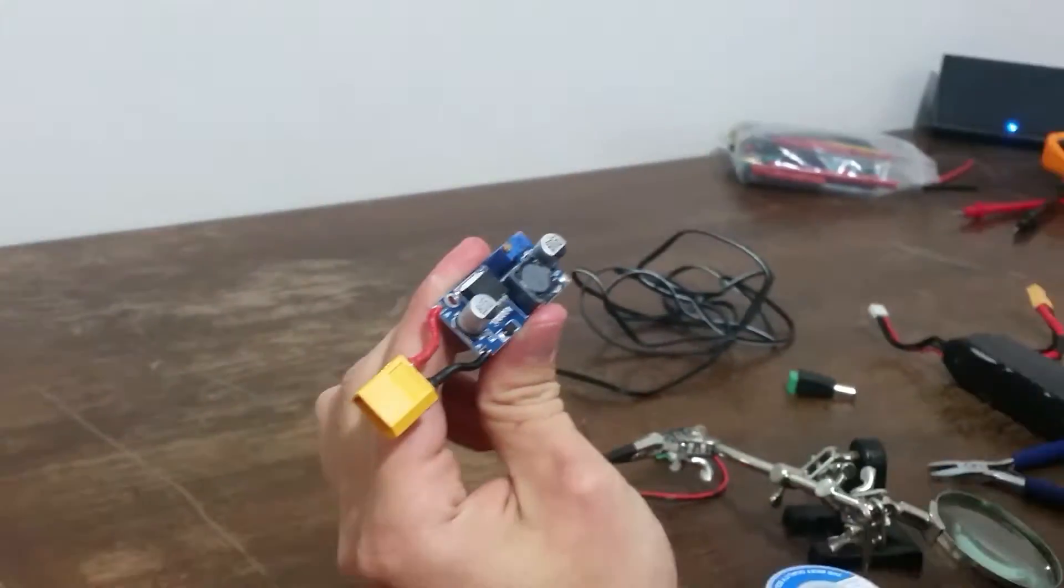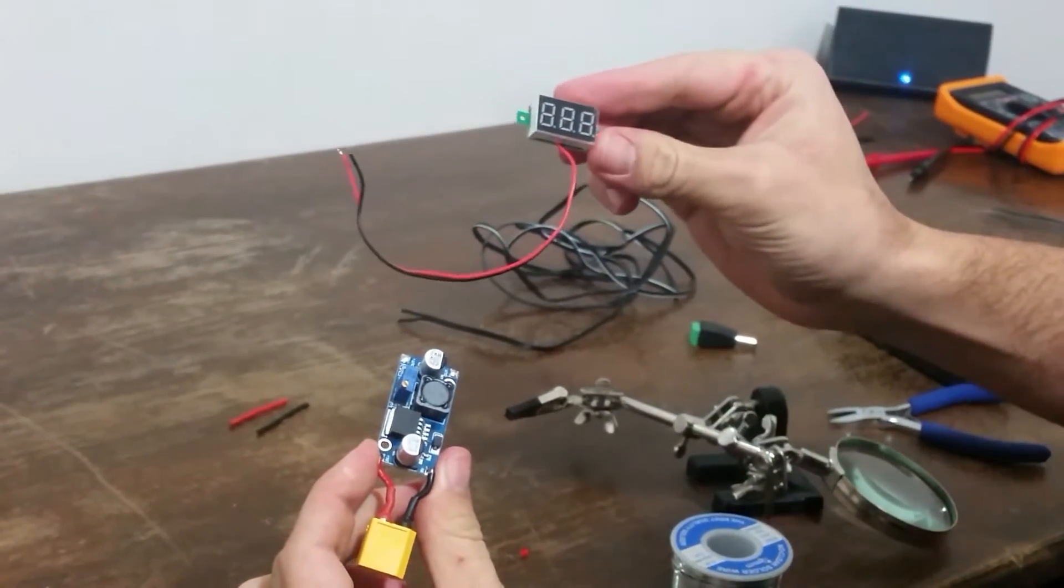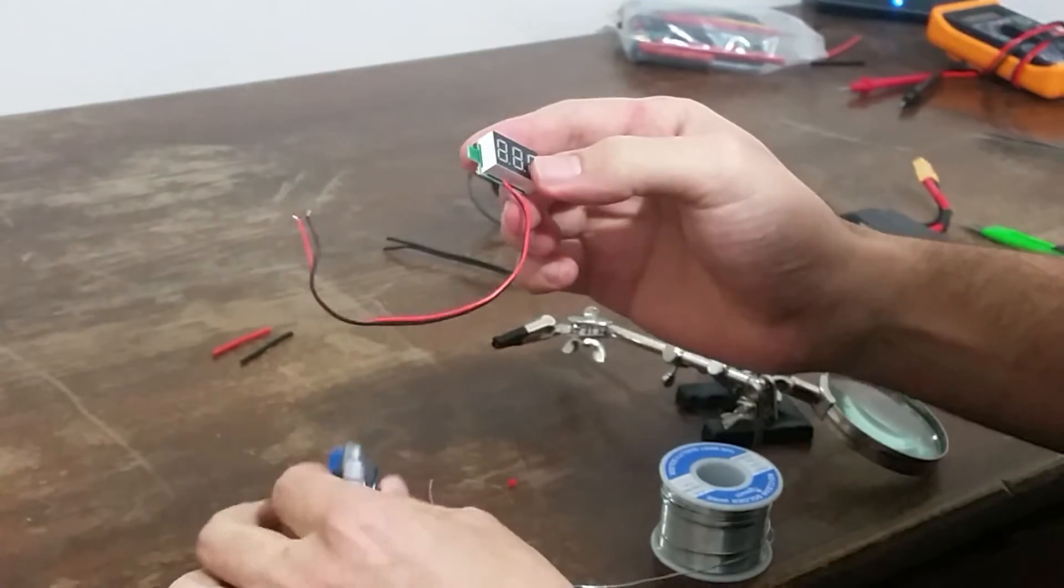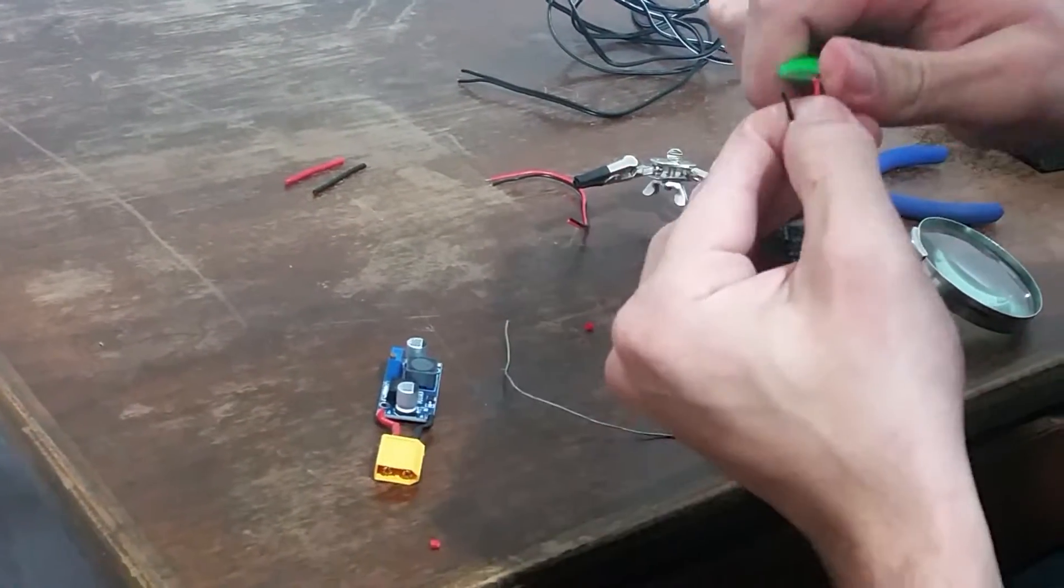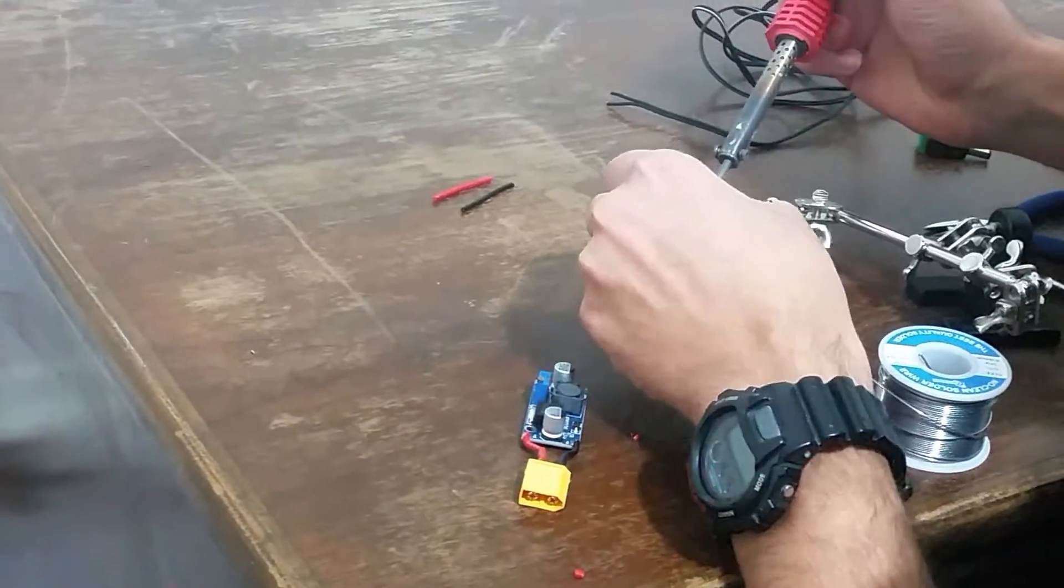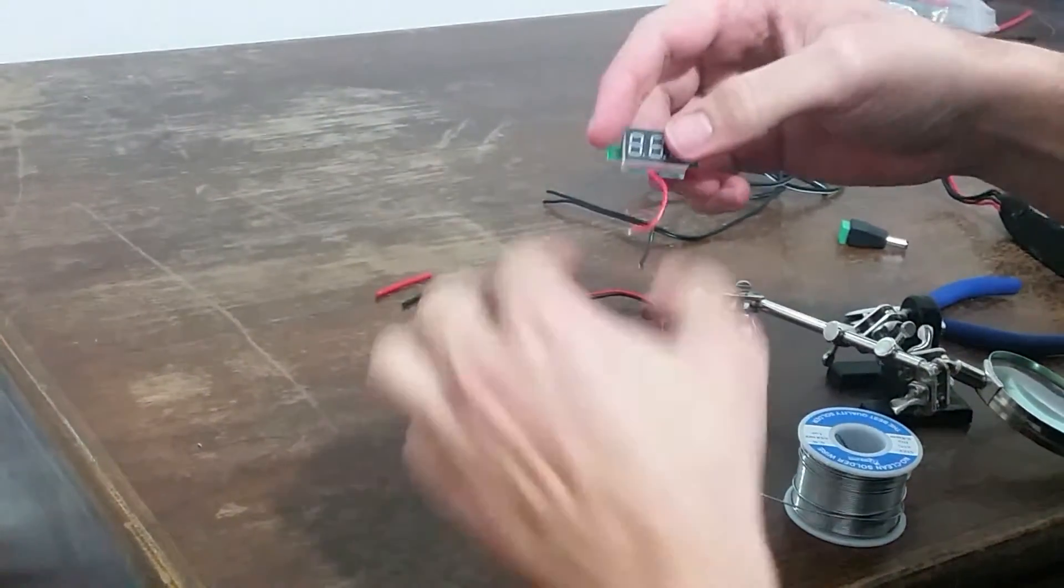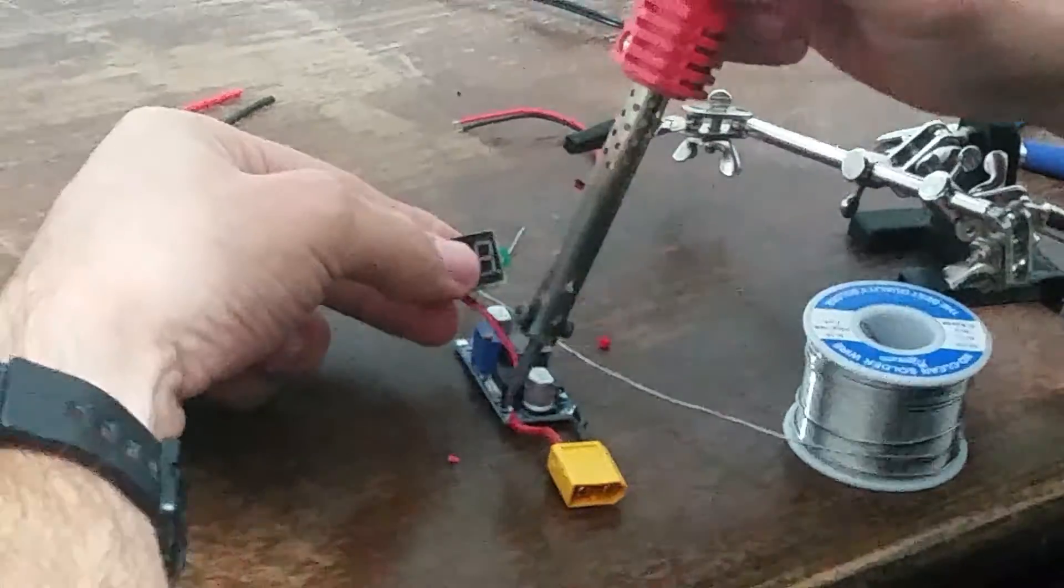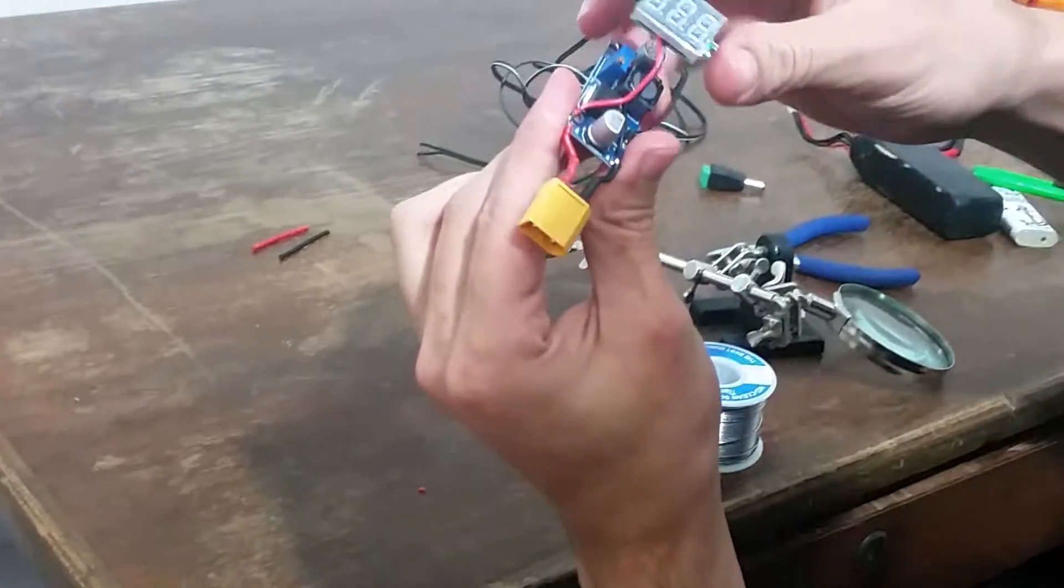So that should do it for now. The next thing we're going to do, I have this voltmeter which is going to show me the voltage as I connect the battery. It's going to show me the battery voltage, not the voltage coming out. So let's connect that now and I'm also going to shorten the wires because they're pretty long. I'm going to solder it straight to the connections of the XT60 so it gets the battery's voltage. Now it's connected.